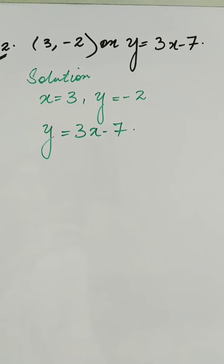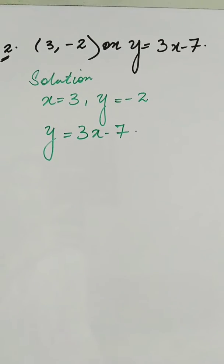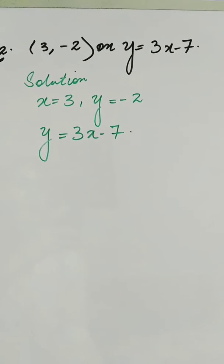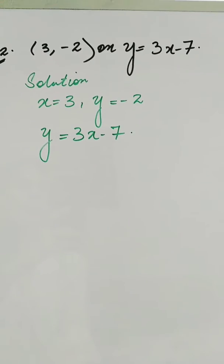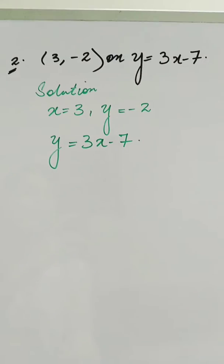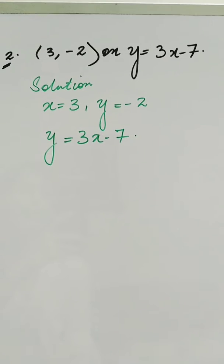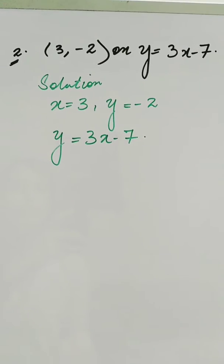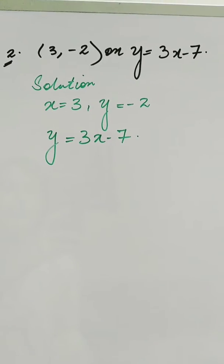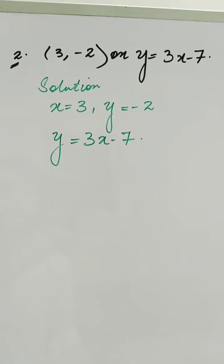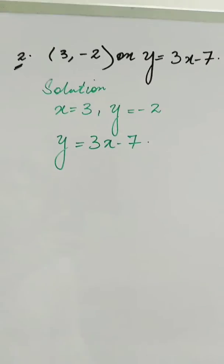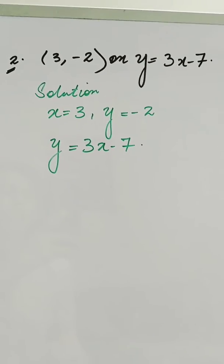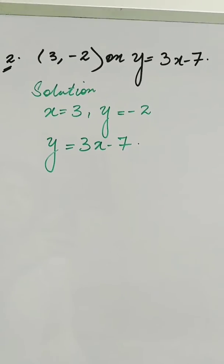We have another question in which the coordinates are given as (3, -2). So x = 3 and y = -2. The given equation is y = 3x - 7. We have to test whether these points lie on the equation of the given line or not.